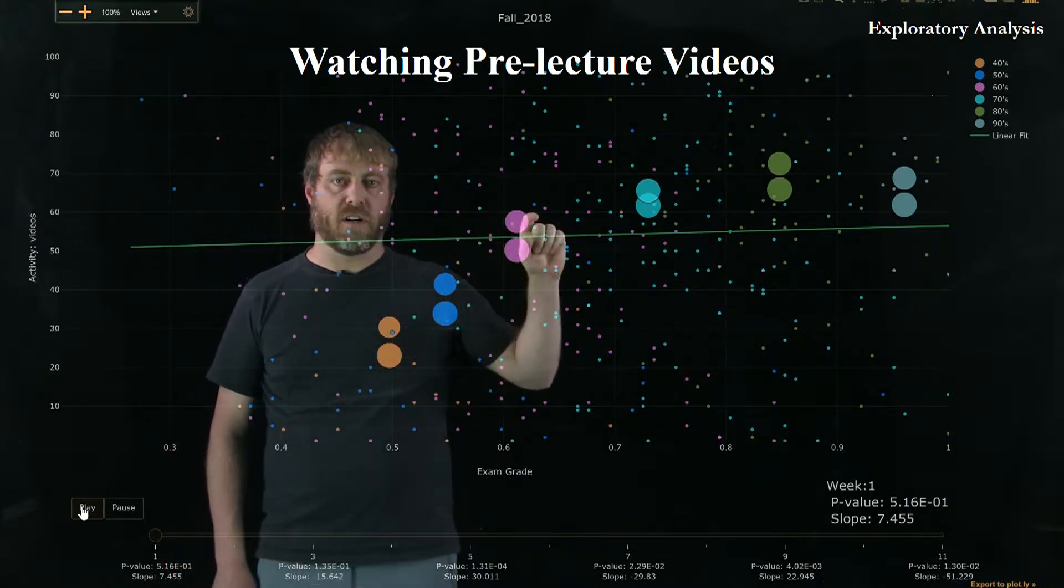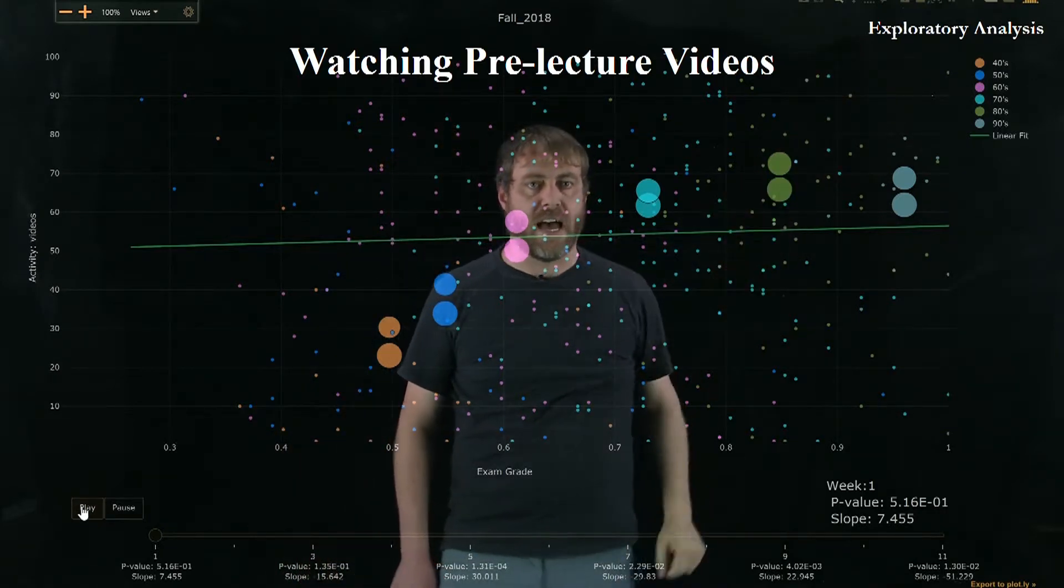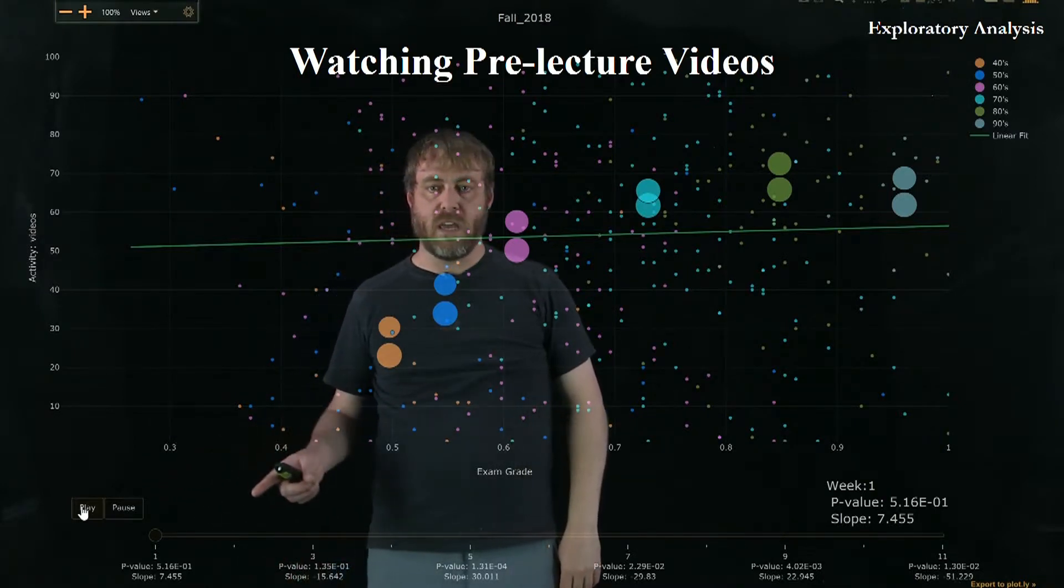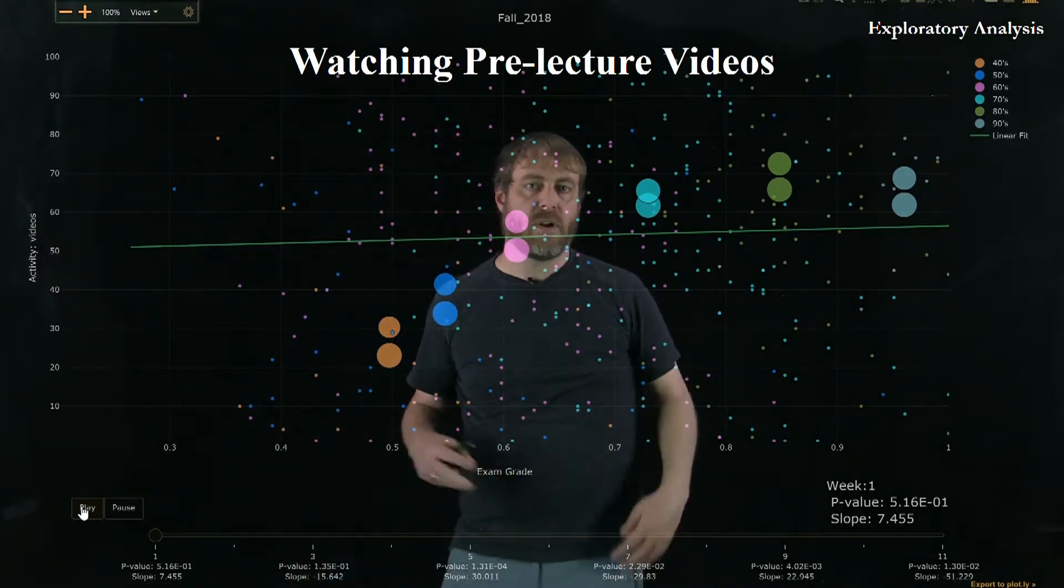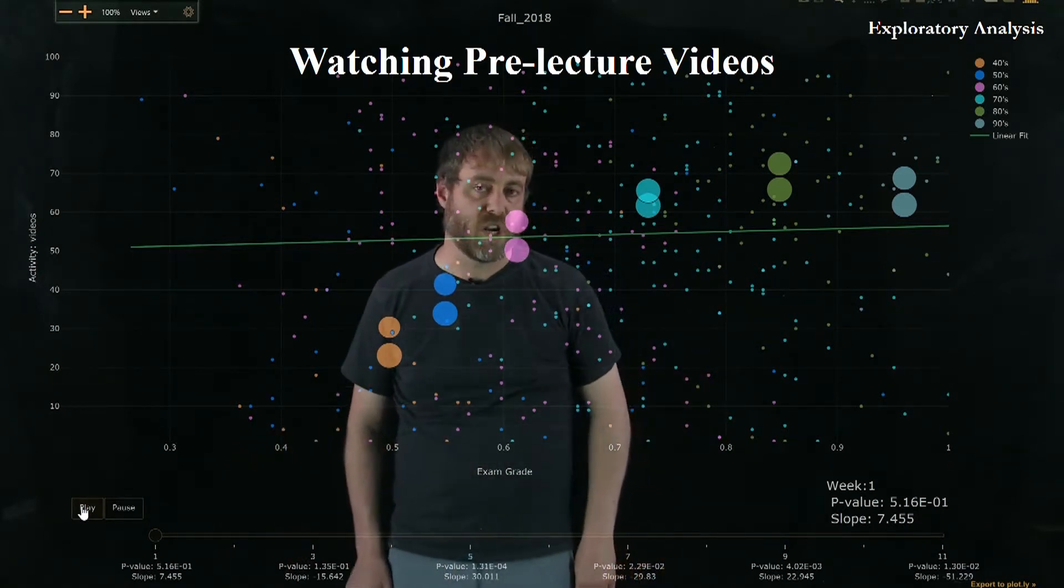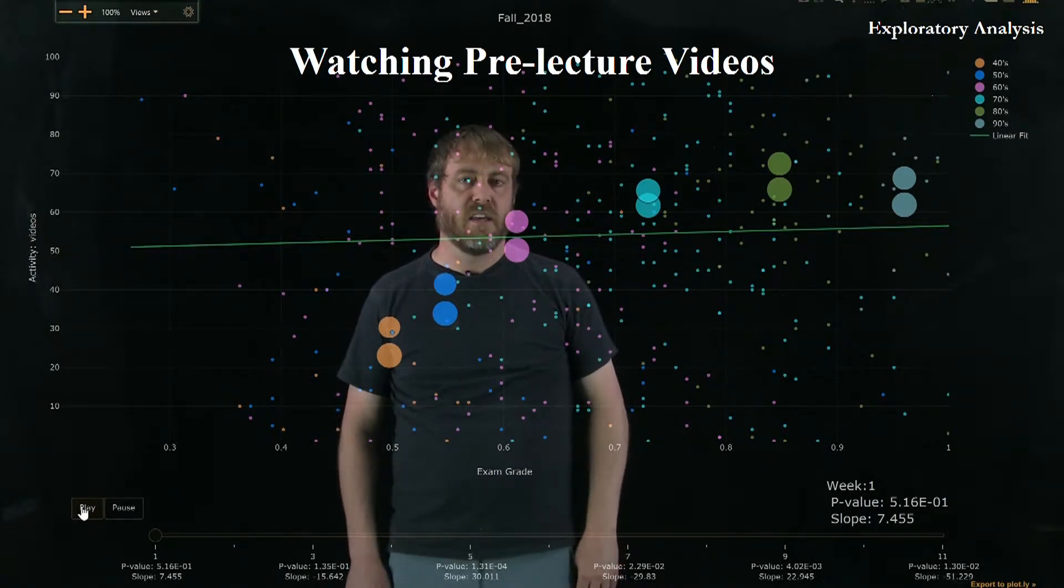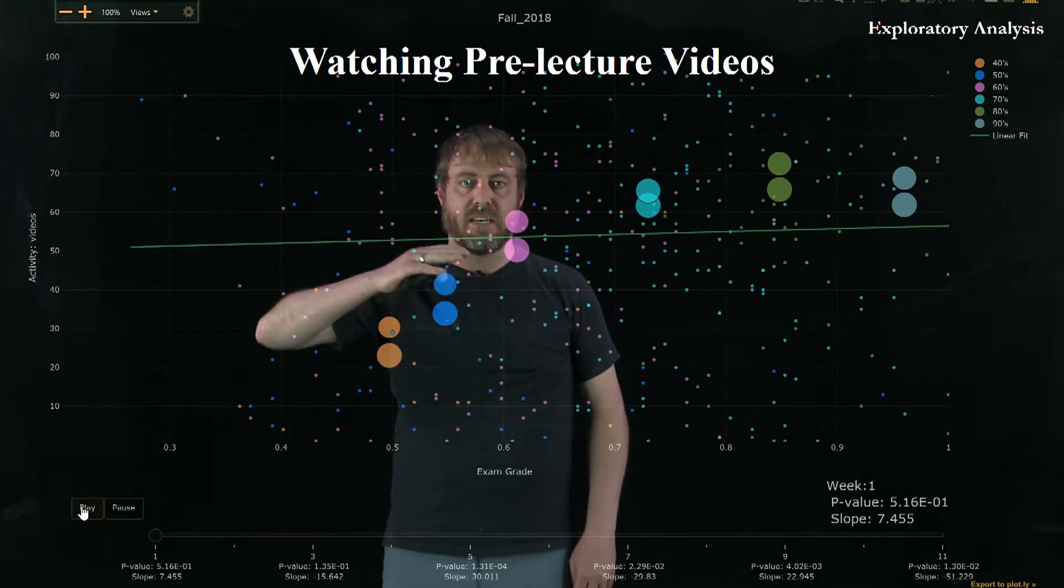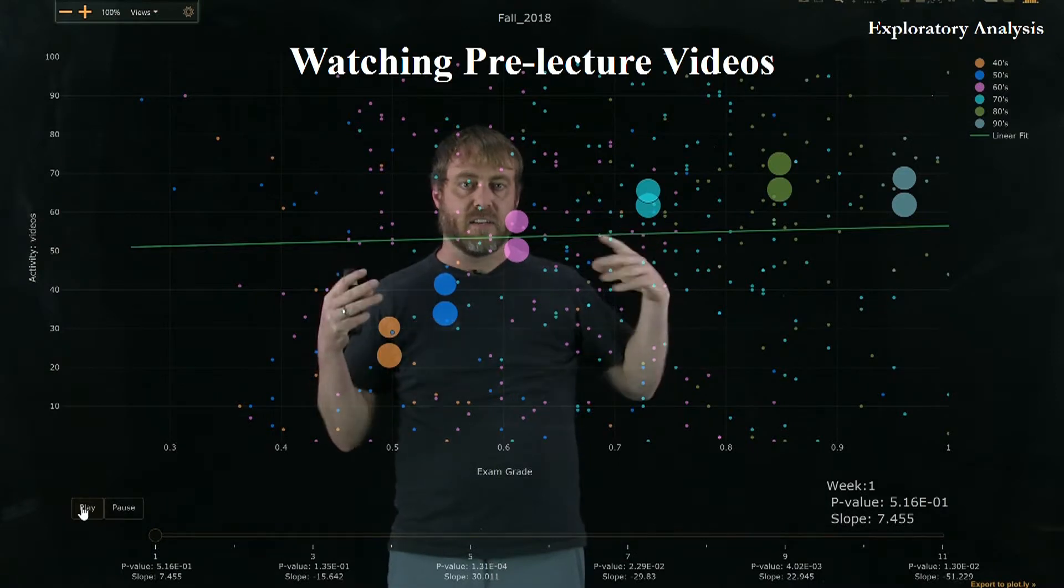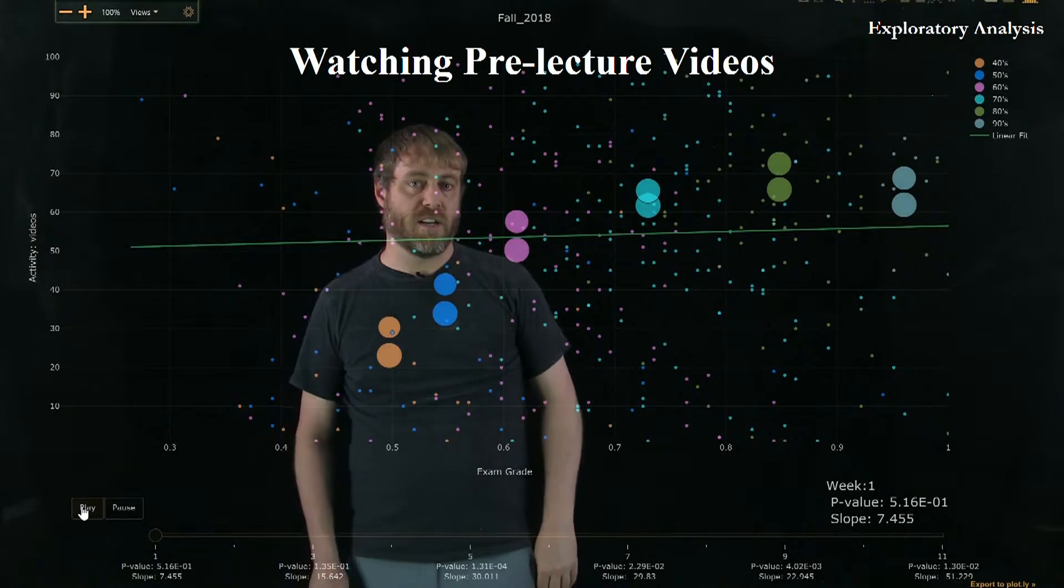And then these big circles here are actually grouping students based on what grade range they had for their final overall grade. And what we can do is we can look at this on a week by week basis and see what happens. How does it evolve? Does it change? Does it matter which week? Obviously, we had evidence that the overall engagement changed by week. What I want you to pay attention to while I watch this video is the movement of the slope. The slope is going to be going up and down. So let's watch this video.